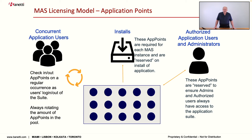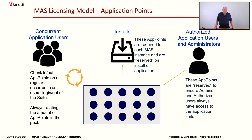Users can be set up in two models. Concurrent users borrow points while connected to the environment and return them to the pool when they log off. Authorized users have points permanently assigned — important for administrators and those in the system extensively throughout the day. Authorized users consume about a third as many points as concurrent users, so heavy users don't burn through points unnecessarily, and occasional users aren't reserving points 24/7. This lets organizations optimize their points utilization based on actual usage patterns.